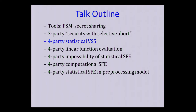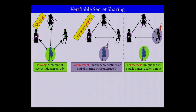Next we move to four-party statistical VSS. Verifiable secret sharing schemes are analogs of commitments in the multi-party setting: you have a commit (sharing) phase and an open (reconstruction) phase. In the sharing phase, the dealer commits to his input. We want privacy — the dealer's input is private from malicious parties at the end of the commit phase — and then in reconstruction, we want the unique secret defined at commit time to be correctly reconstructed.